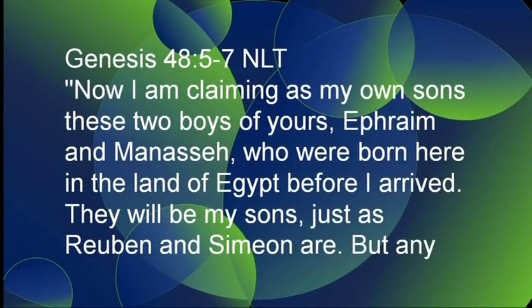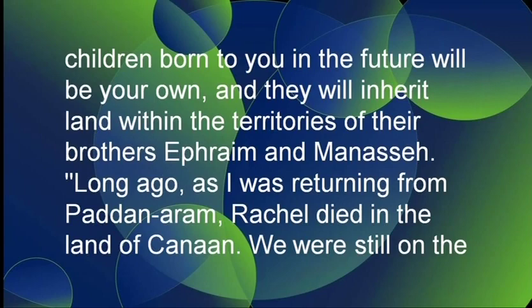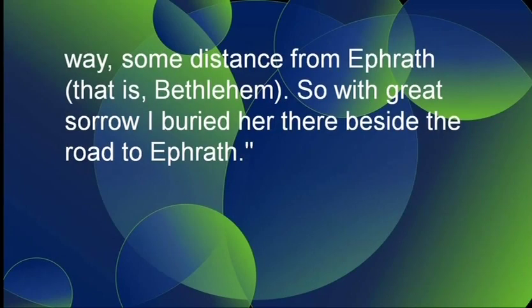Look at verses 5 through 7. 'Now I am claiming as my own sons these two boys of yours, Ephraim and Manasseh, who were born here in the land of Egypt before I arrived. They will be my sons just as Reuben and Simeon are. But any children born to you in the future will be your own, and they will inherit land within the territories of their brothers Ephraim and Manasseh. Long ago, as I was returning from Paddan Aram, Rachel died in the land of Canaan — we were still on the way, some distance from Ephrath, that is Bethlehem — and with great sorrow I buried her there beside the road to Ephrath.'